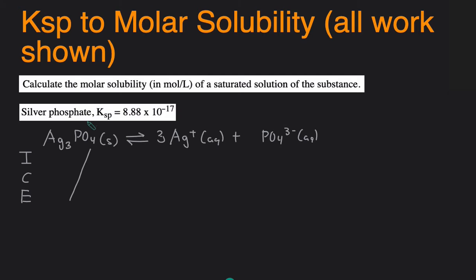If it doesn't mention what the solvent is then you just assume that the solid is being dissolved in water. And water initially doesn't contain any of these ions so the initial concentration of silver will be zero and the initial concentration of phosphate will also be zero molar.